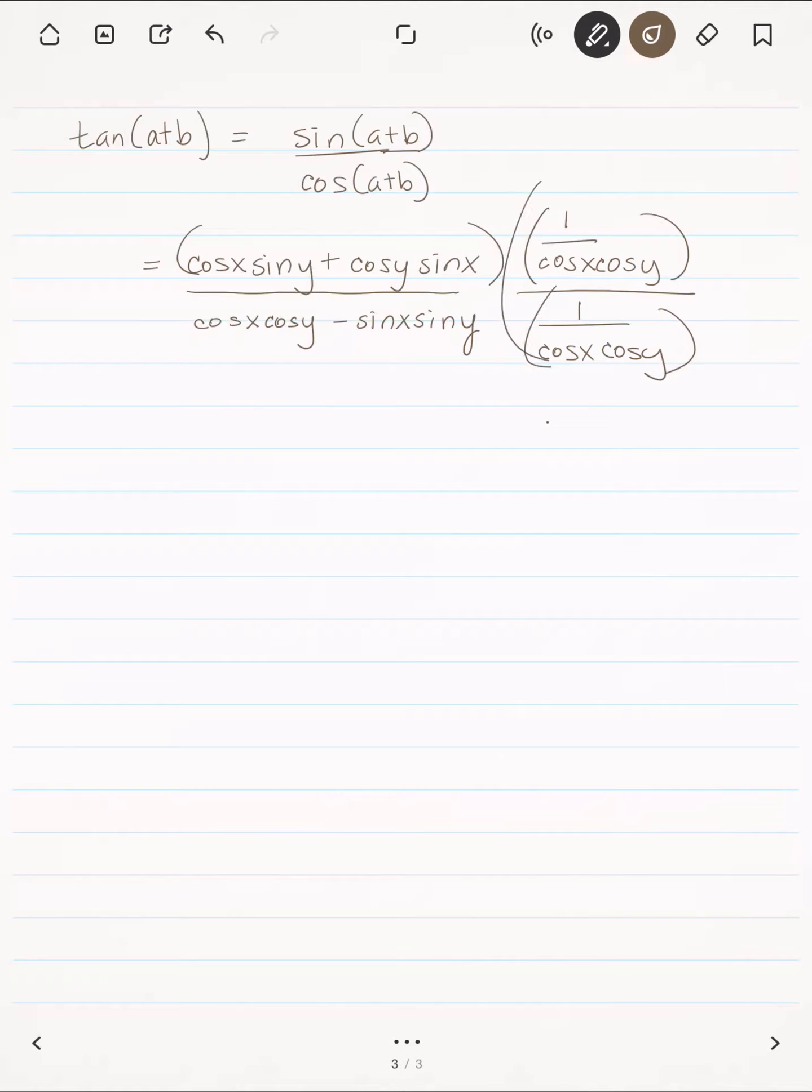Essentially, I'm dividing every single term by those terms. So this is going to be equal to the cosine of x sine of y all over the cosine of x sine of x—oh, sorry, cosine of y.